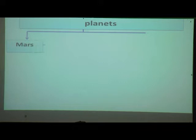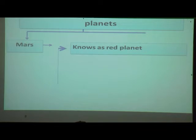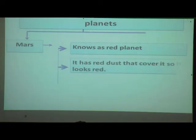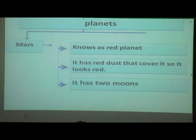Now we will see about Mars. It is called the red planet. It has red dust that covers it, so it looks red. Earth has one moon, but Mars has two moons.